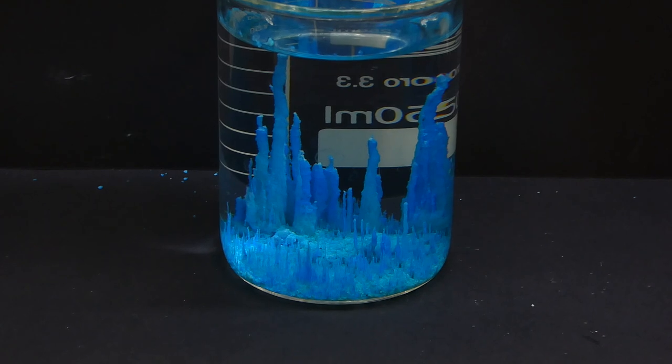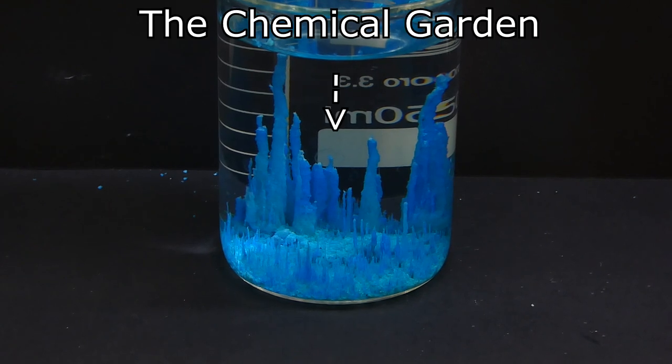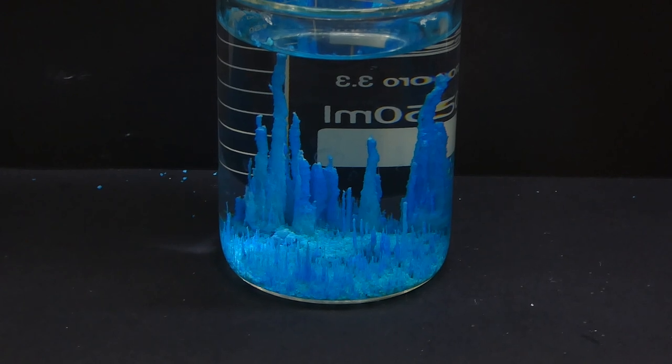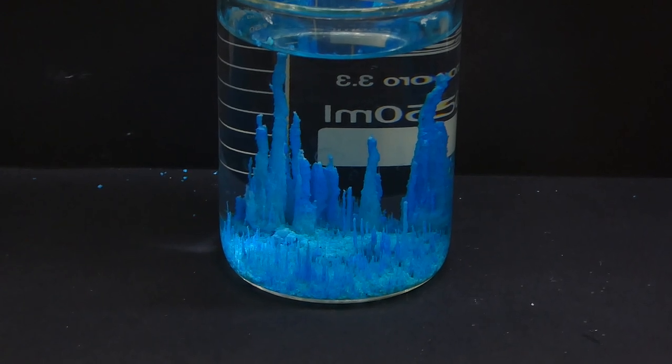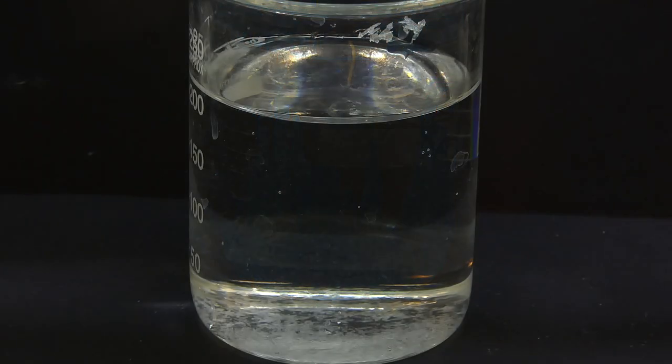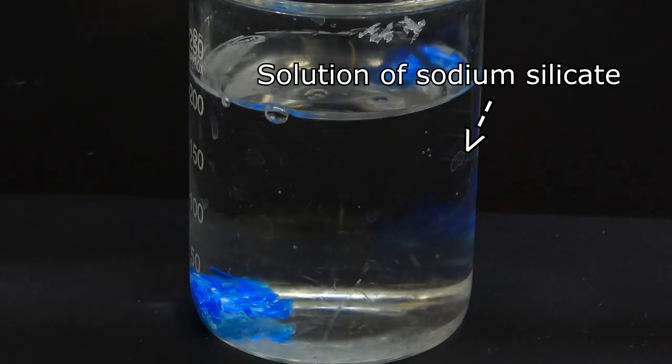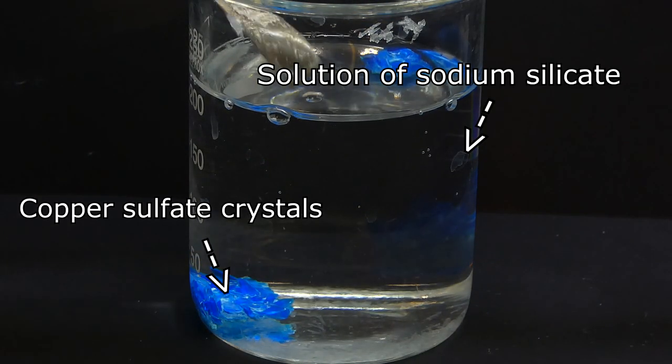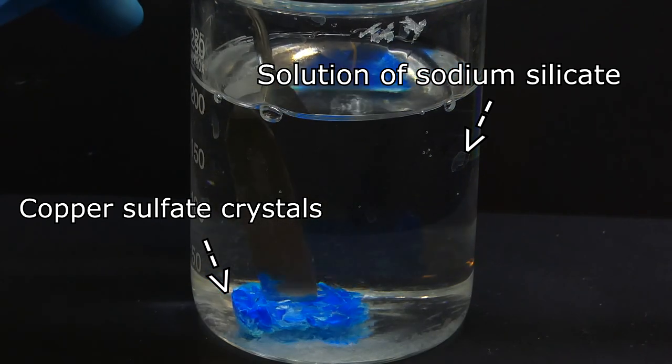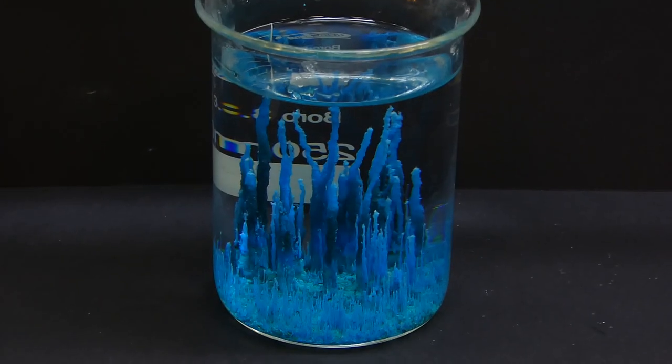Some of you might have heard about an experiment called the chemical garden. It's not super popular, but it can make some beautiful decorations and it's very easy to do using just home chemistry. The experiment is composed of firstly making an aqueous solution of sodium silicate and then dropping some metal salt crystals into it to produce some nice looking structures, which can look like a colorful garden.